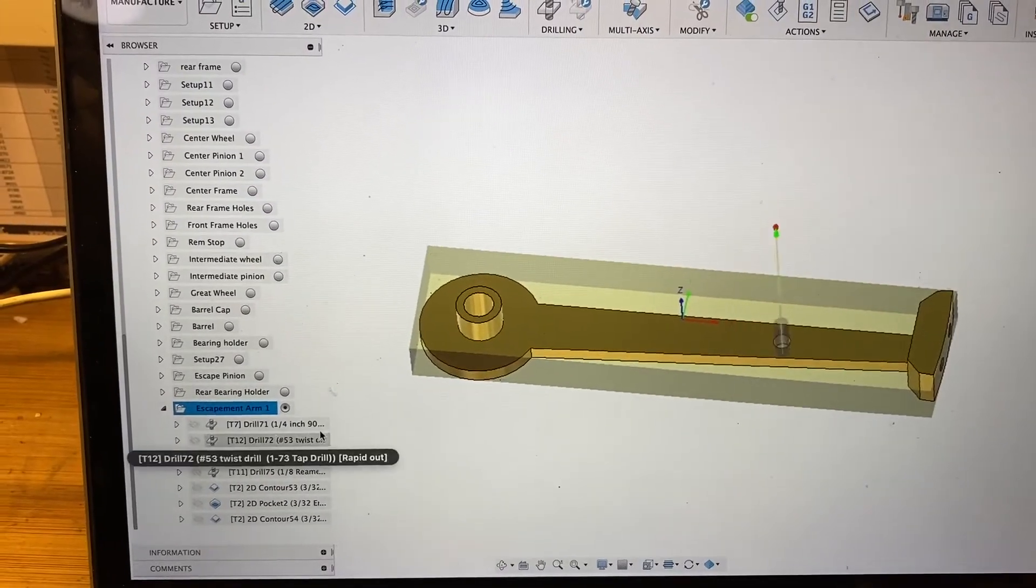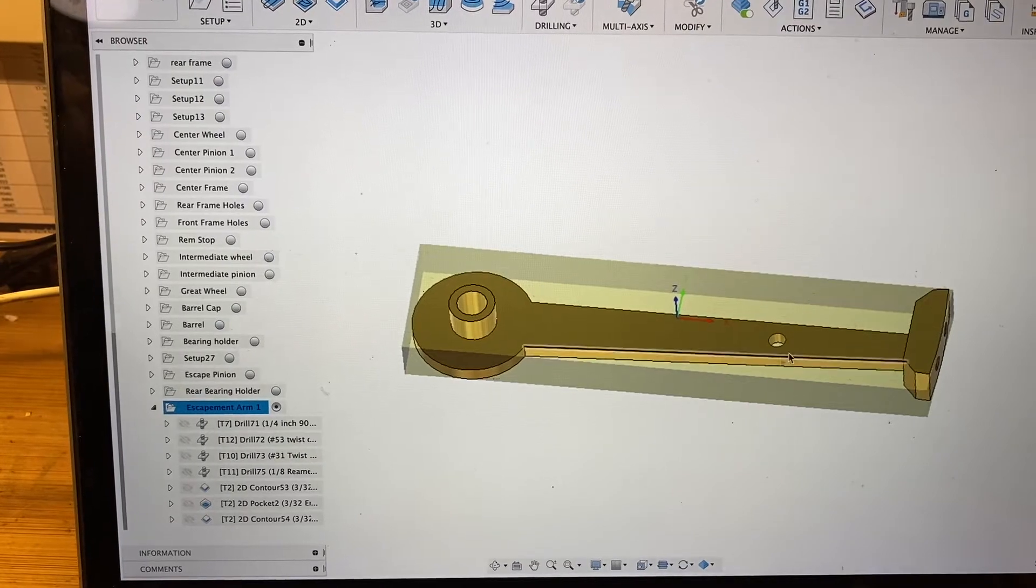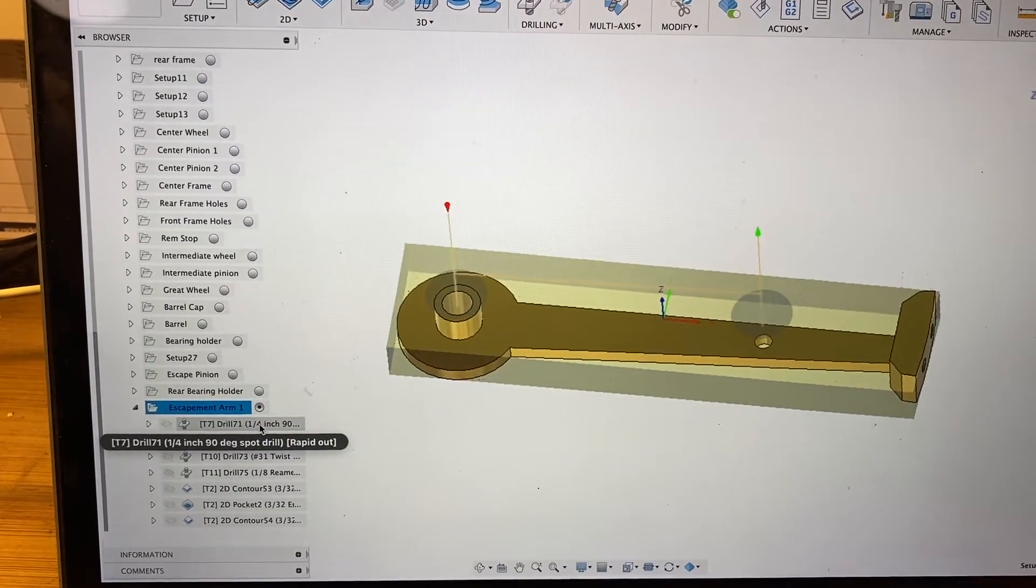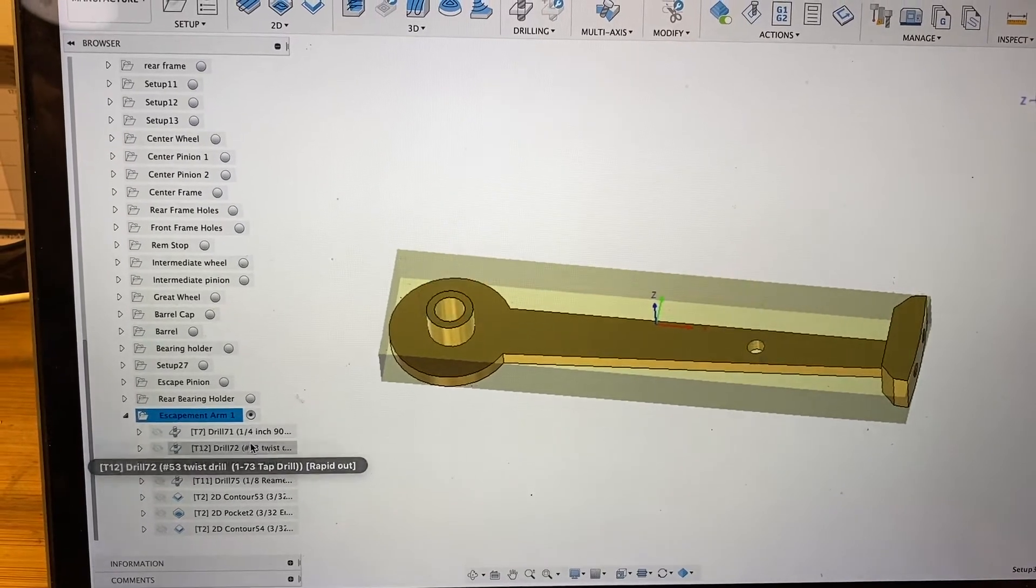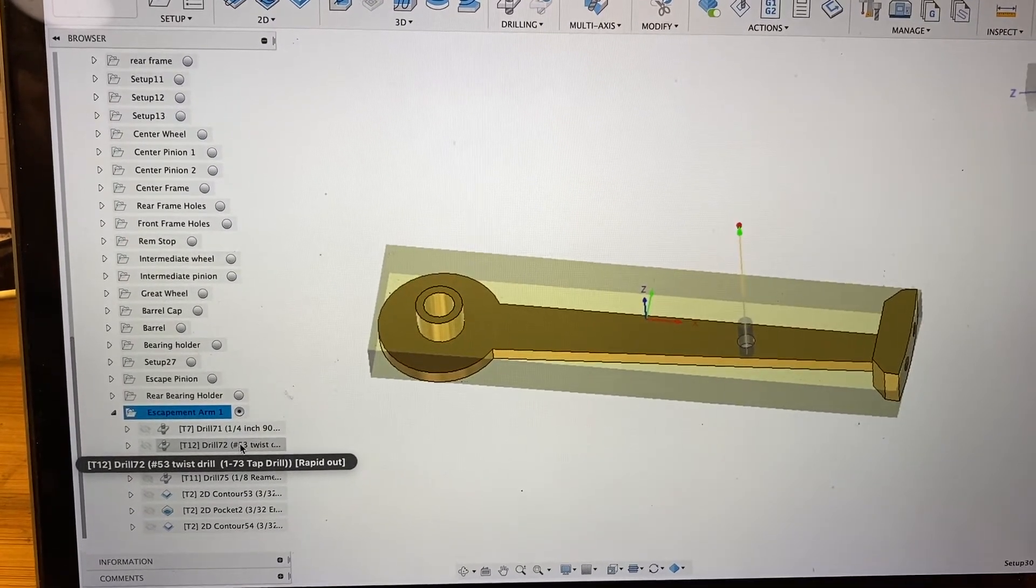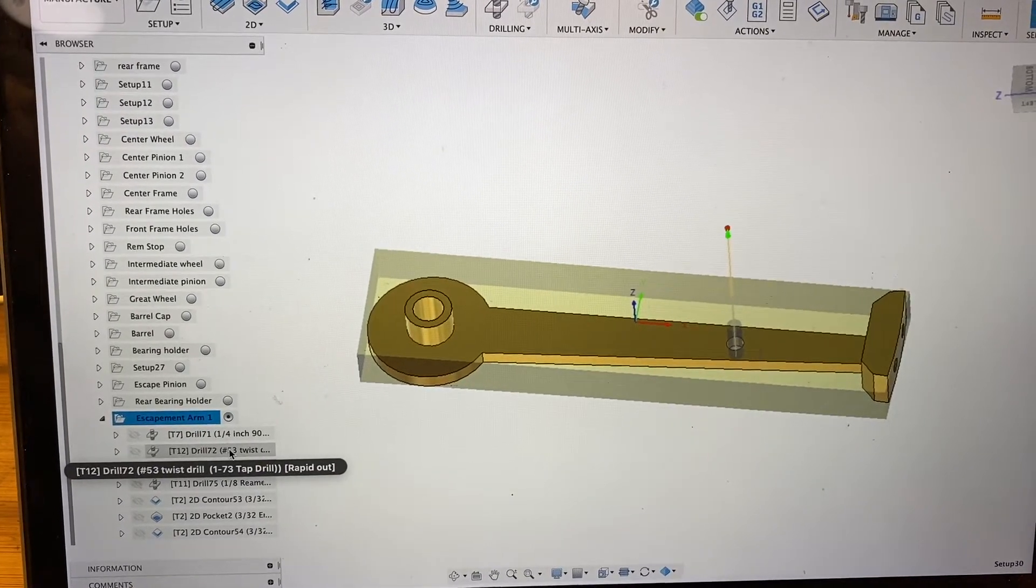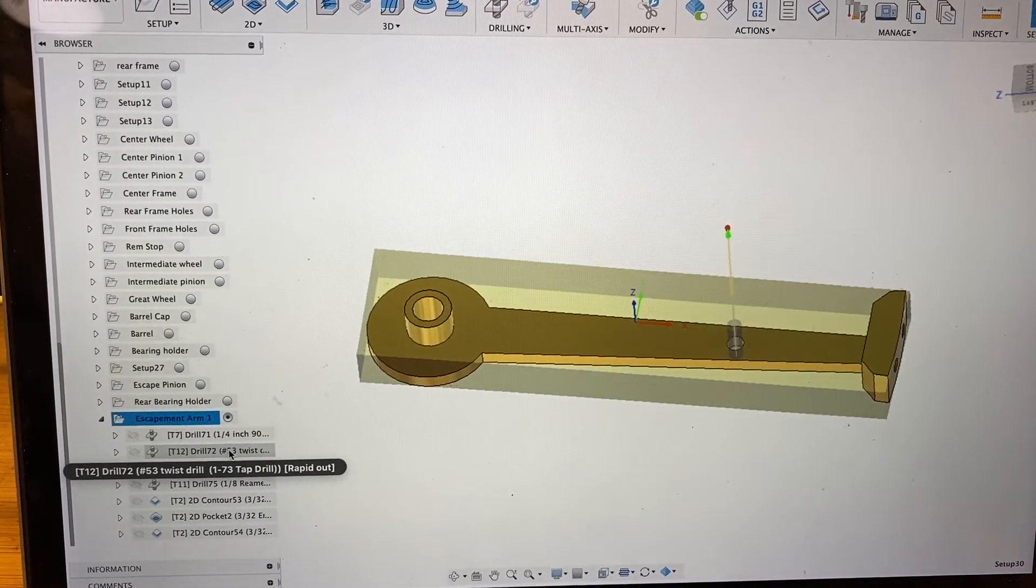We're looking at Fusion 360, I've got the part in and the operations. First thing we're going to do is hit it with a spot drill in the two holes, then we'll come in with a number 53 twist drill - that's the right tap drill for a 1-72 hole.